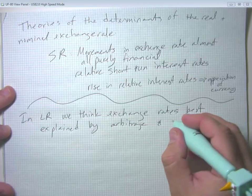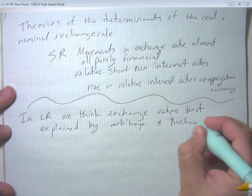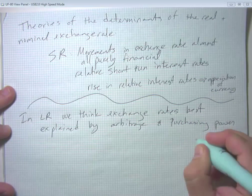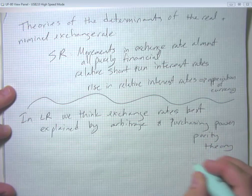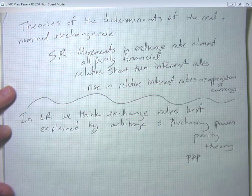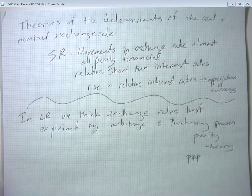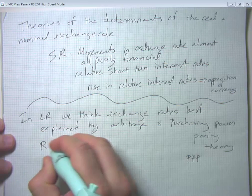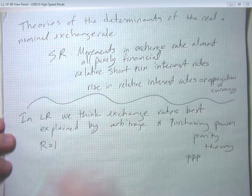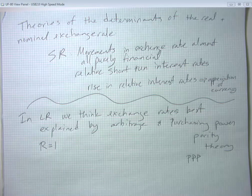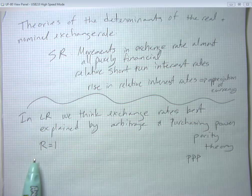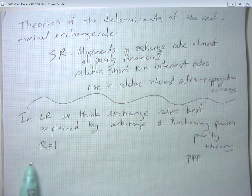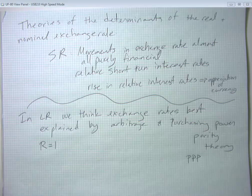And what we call purchasing power parity theory. So purchasing power parity is often written as PPP. And remember that was that idea that arbitrage causes the real exchange rate to go to one. And you can see why this is called purchasing power parity, because when the real exchange rate equals one, then buying a hotel room or a ream of paper is equally expensive in all countries.